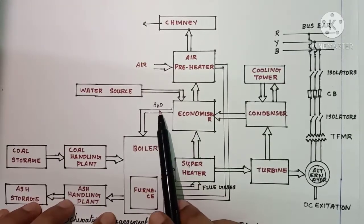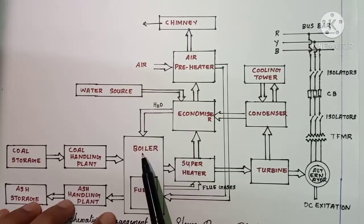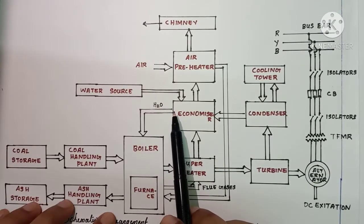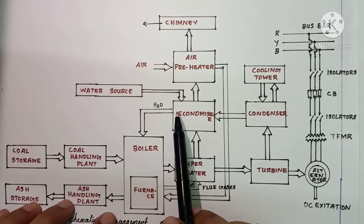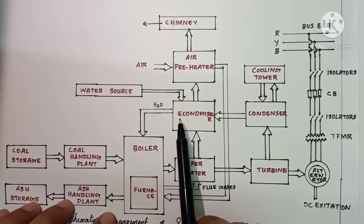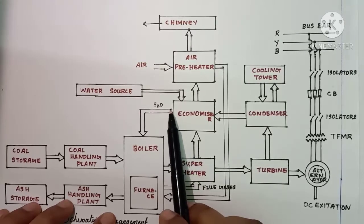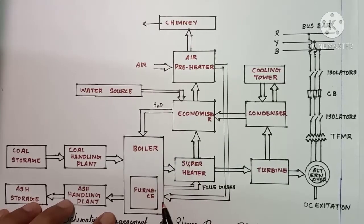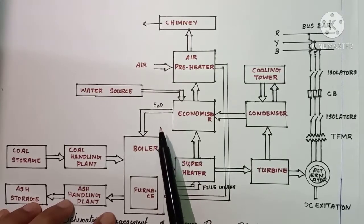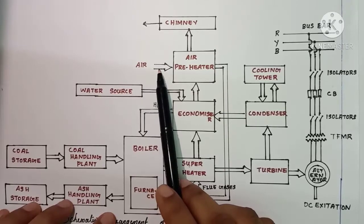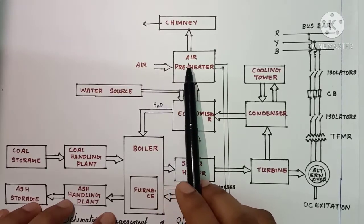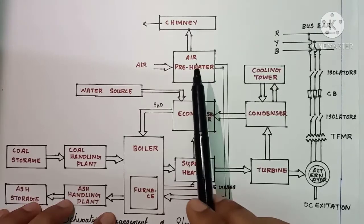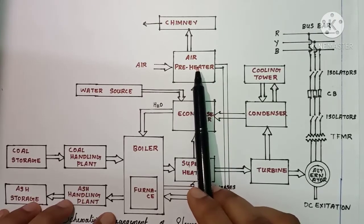From the economizer region, some feed water — which already contains some heat — is fed directly into the boiler. In addition to this, air from the atmosphere is absorbed by the air preheater.